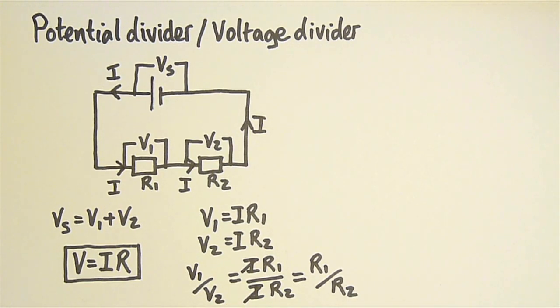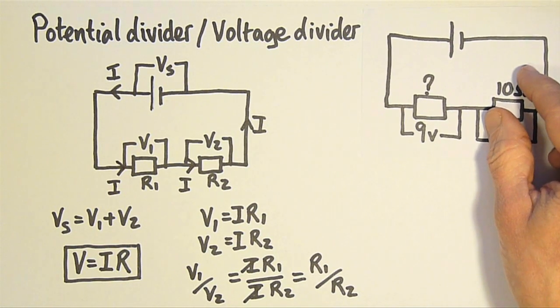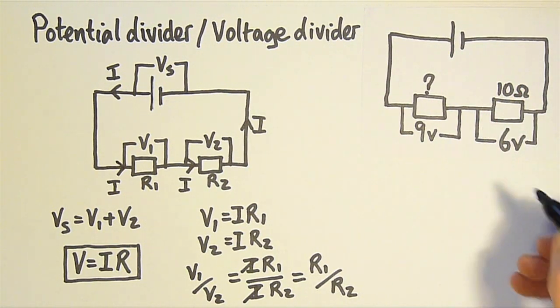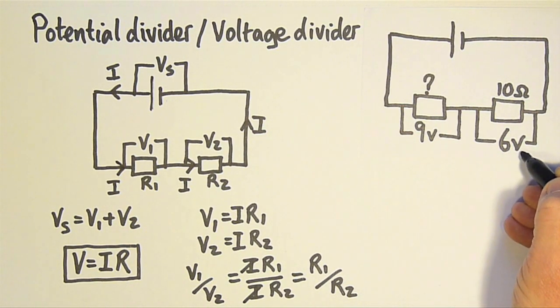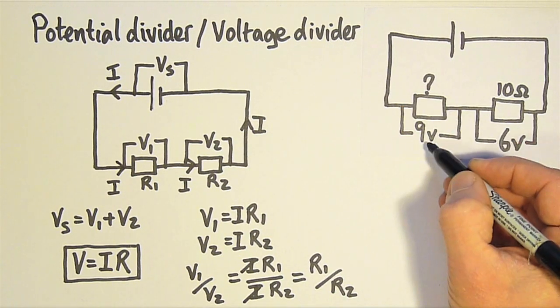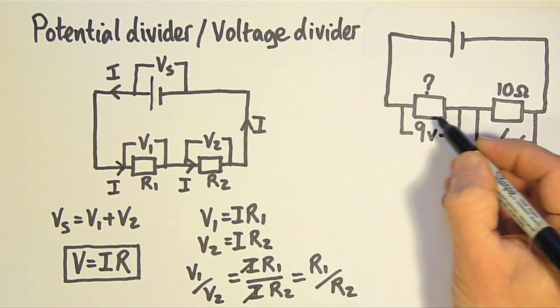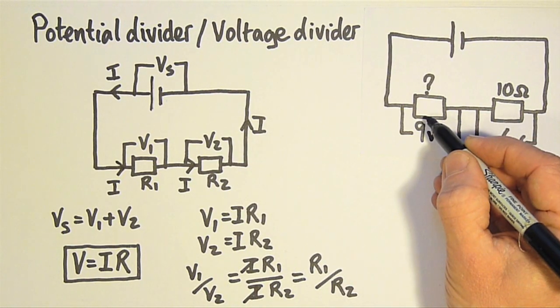Let's use that to solve this problem. I've got a resistor with 10 ohms, with 6 volts across it, and an unknown resistor with 9 volts across it, in a series circuit as a potential divider.